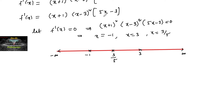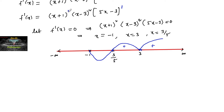Now by using the wavy curve method: start from the rightmost point x = 3. Since (x−3) has even power (squared), the curve stays positive and does not change sign at x = 3. At x = 3/5, since the power is odd, the sign changes from positive to negative. At x = −1, since (x+1) has odd power, the sign changes from negative to positive. A link explaining the wavy curve method is given in the description box — please check that video.